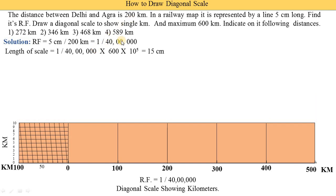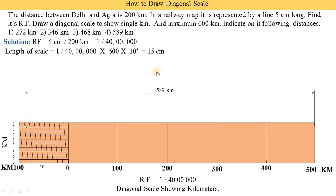First, we indicate 589 kilometers. We locate 500 kilometers on the main scale. The remaining 89 kilometers is indicated on the diagonal scale — moving along 80 on the horizontal subdivision, then moving upward 9 divisions on the vertical scale to get the point. We draw a vertical line from this point and mark it as 589 kilometers.